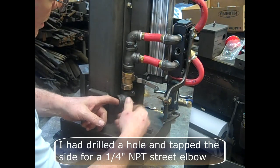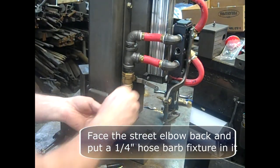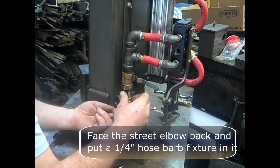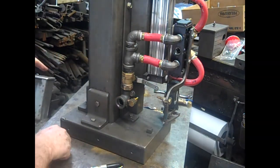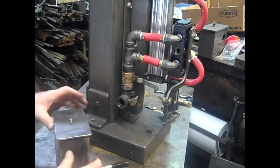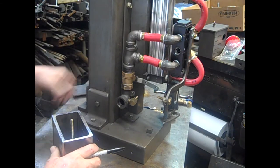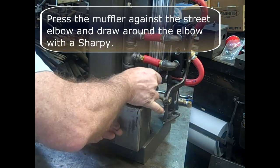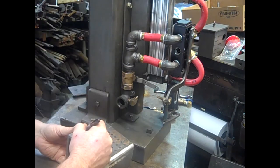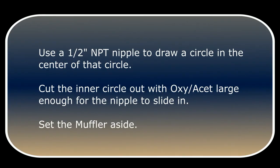I had drilled a hole and tapped the side for a quarter-inch NPT. Face the street elbow back and put a quarter-inch hose barb fixture in it. Press the muffler against the street elbow and draw around the end with a Sharpie. Use a 1 1/2 inch NPT nipple to draw a circle in the center of that larger circle. Cut the inner circle out with an oxyacetylene torch large enough for the nipple to slide in. And set the muffler aside.